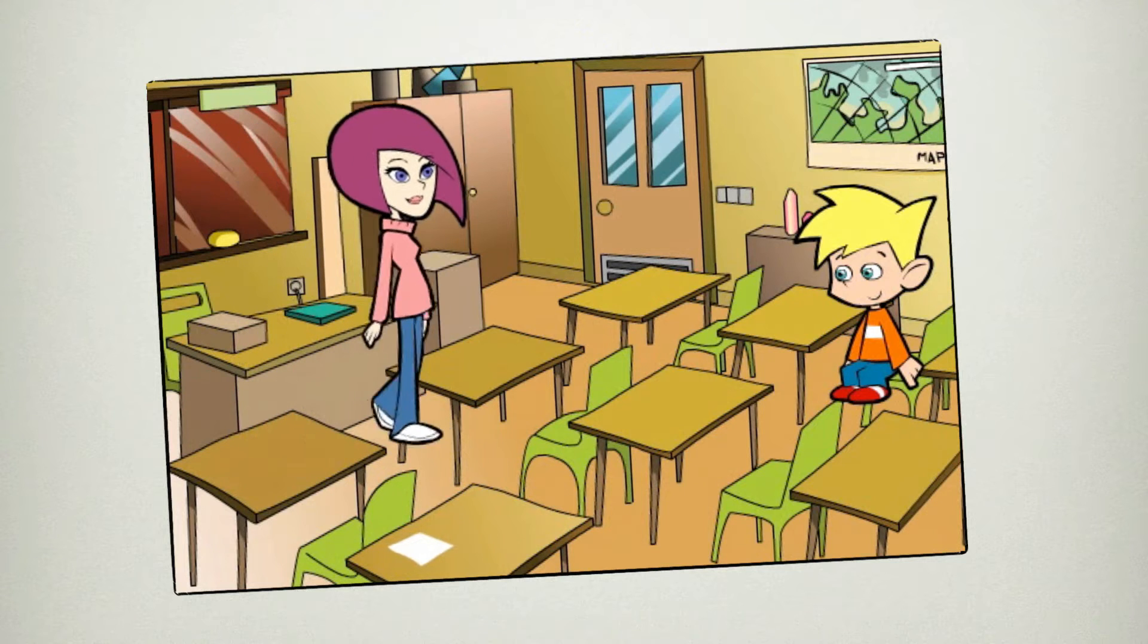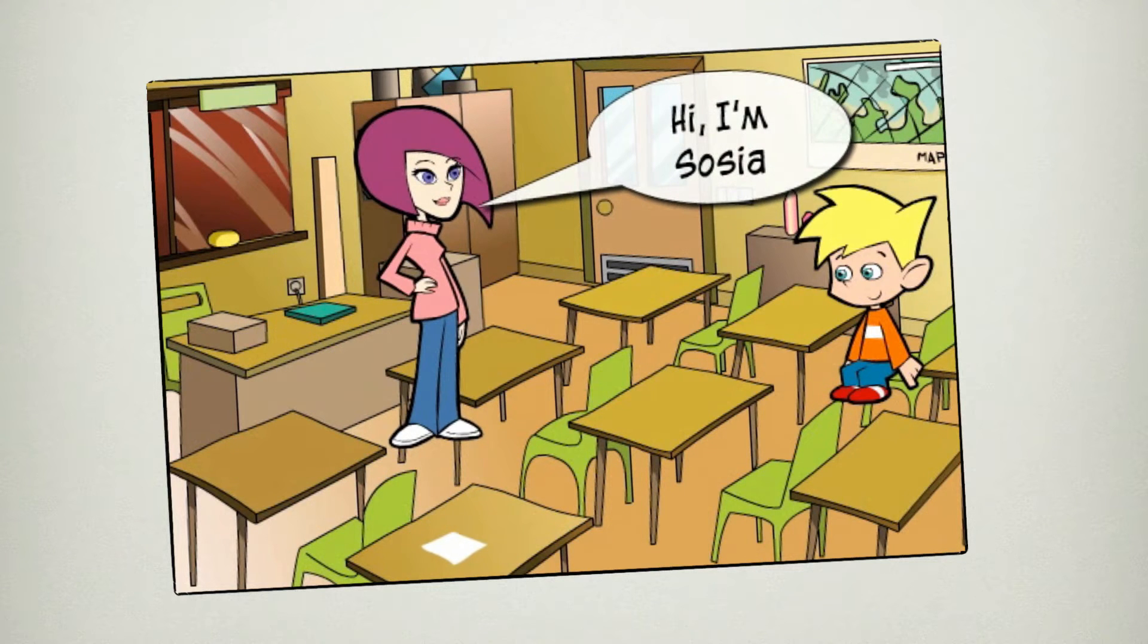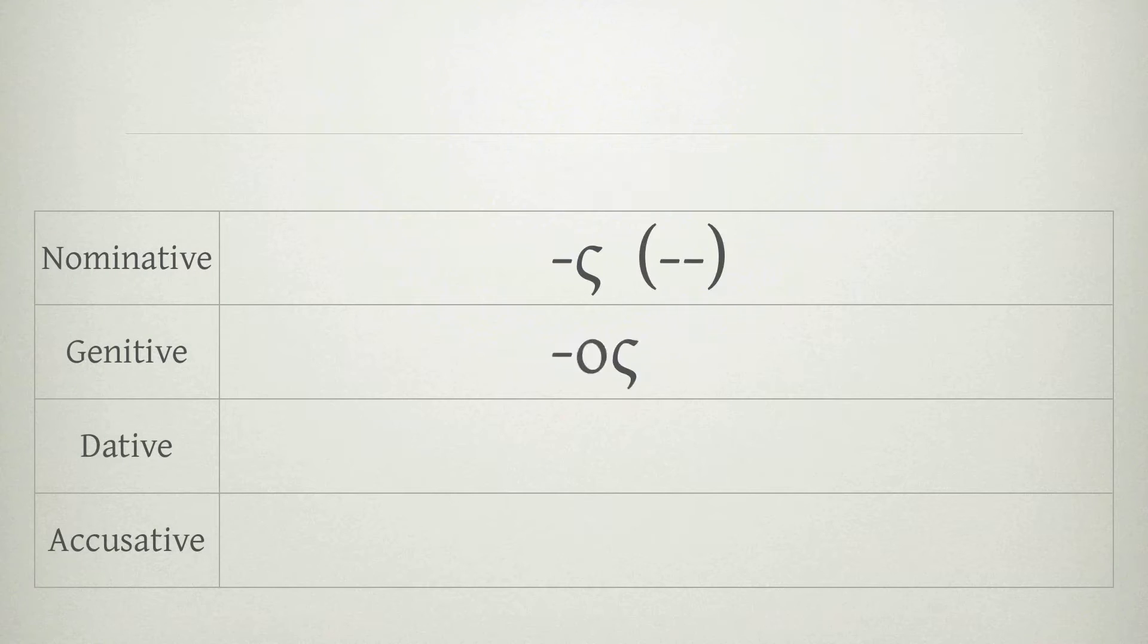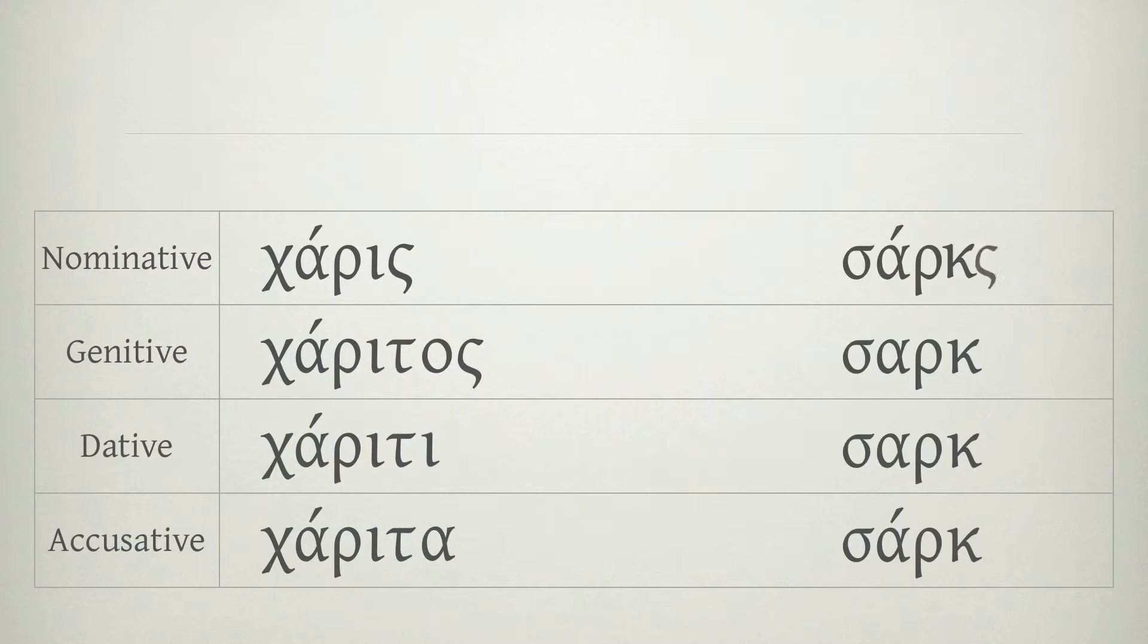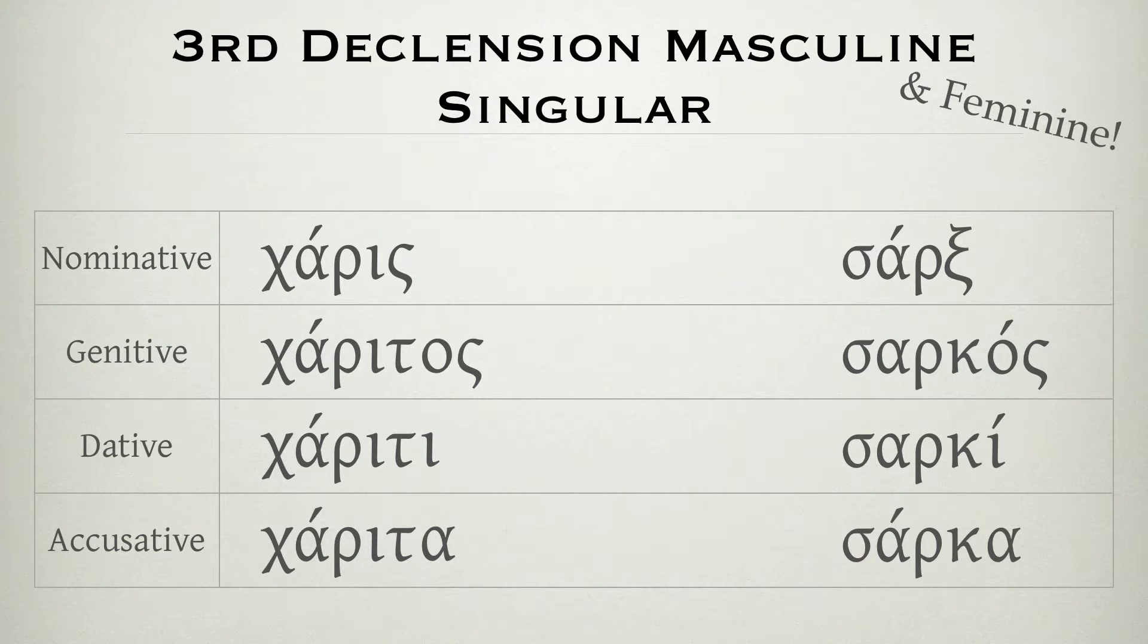There was a student, had a friend, and Saucy-R was her name, oh. S-A-S-E-A, S-A-S-E-A, S-A-S-E-A, third declension, masculine, singular.